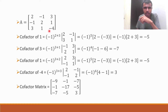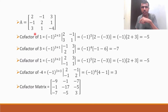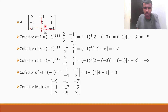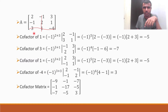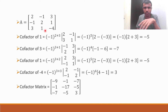Cofactor of 1: position is row 3, column 2. So minus 1 to the power 3 plus 2 into: strike off the row and column, giving 2, 3, minus 1, 1. And cofactor of minus 4: third row, third column. Into the determinant of 2, minus 1, minus 1, 2 — giving 4 minus 1, so 3.